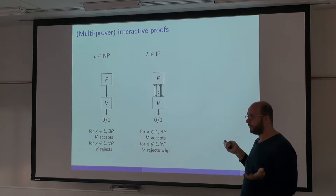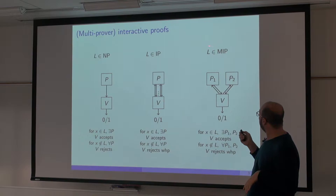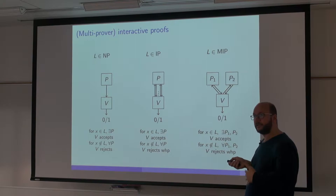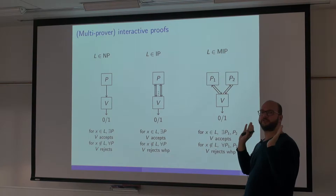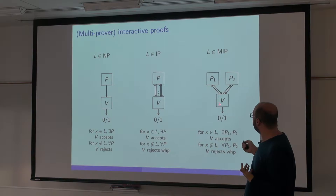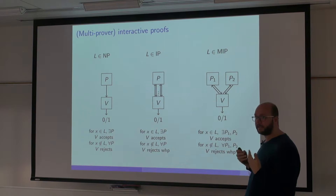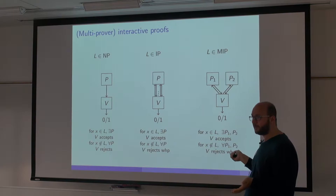We can ask ourselves why limiting to one-way communication. People have extended this model to define interactive proof systems, where now the verifier, still bounded, can ask questions or even challenge the prover, and they keep sending questions back and forth. We want that this interactive protocol makes the verifier accept — that there is some strategy for the prover that makes the verifier accept for true statements — and for no instances, no matter what the prover does, it cannot convince the verifier of false statements.